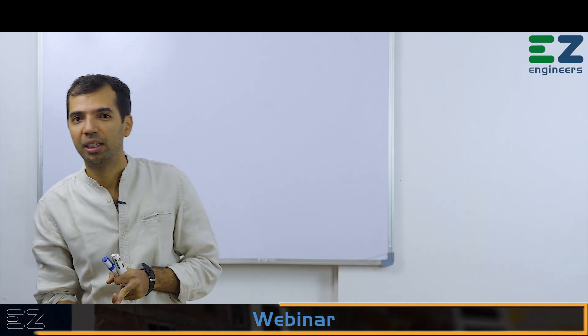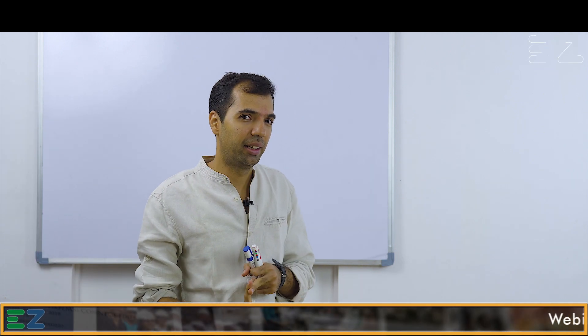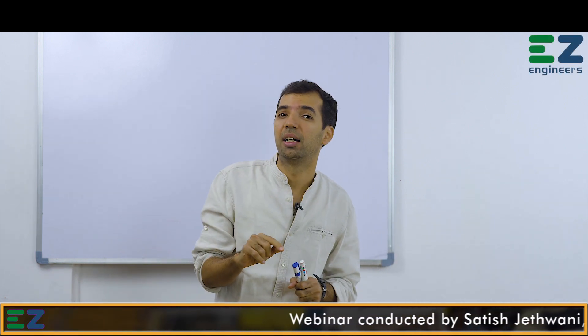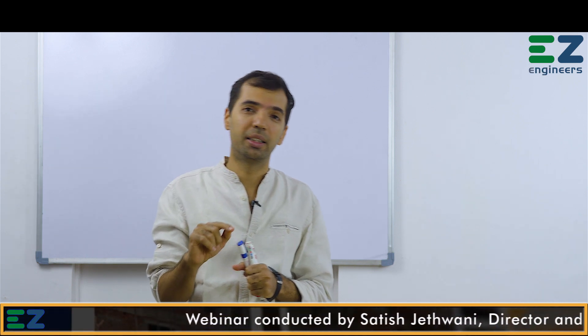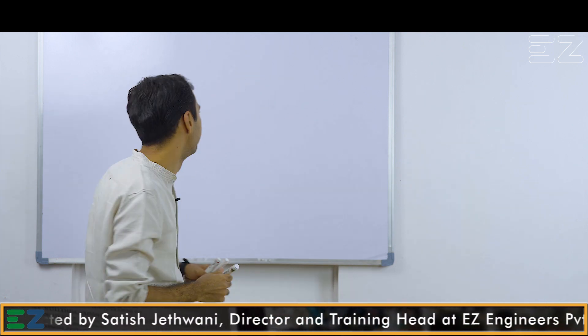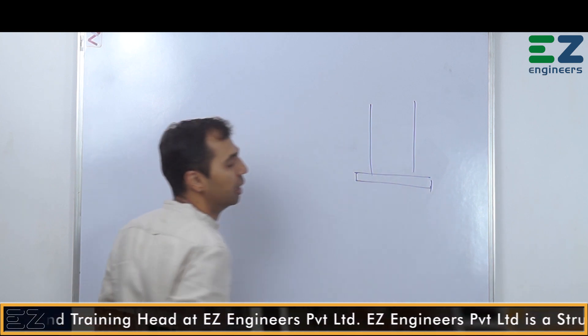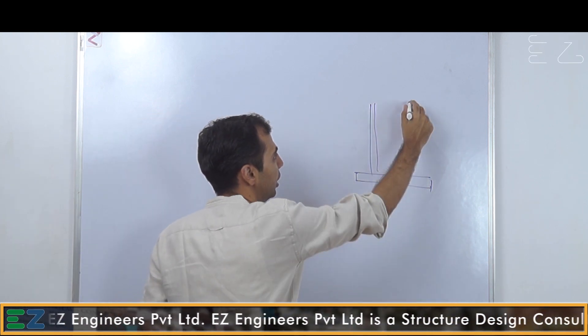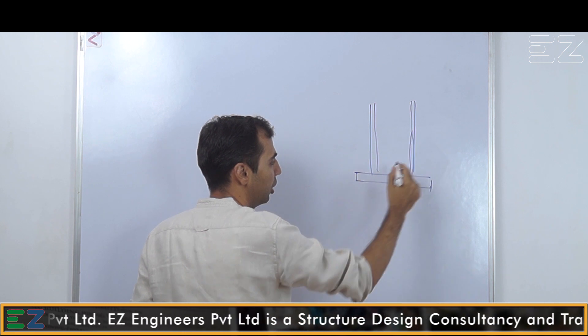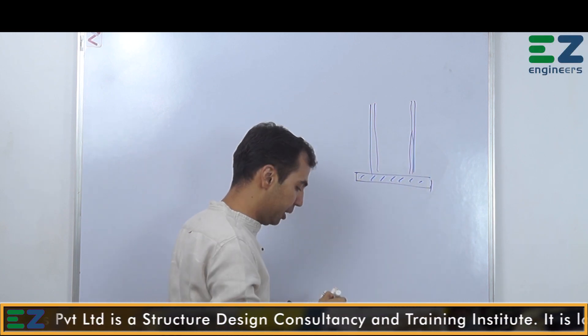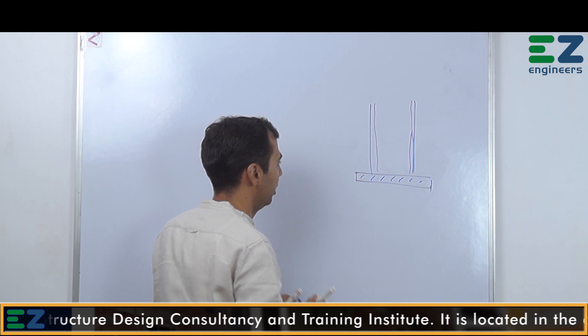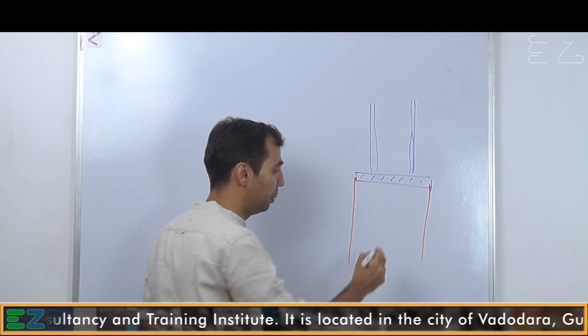Now we have seen the connection types and you can easily identify the connection type by merely looking at it. Now let us understand how we can identify the support — whether it is pinned or it is fixed. Say this is a steel column; these are the flanges, this is the base plate, and below it is of course an RCC pedestal.